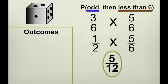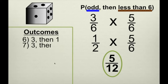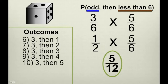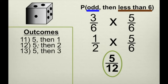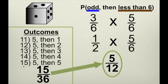The total number of outcomes is thirty-six. Of those, how many ways can we roll an odd number first and then a number less than six? We can roll one-one, one-two, one-three, one-four, one-five; then three-one, three-two, three-three, three-four, three-five; and five-one, five-two, five-three, five-four, five-five. That's fifteen outcomes out of thirty-six. Since fifteen over thirty-six reduces to five-twelfths, our probability is five-twelfths.